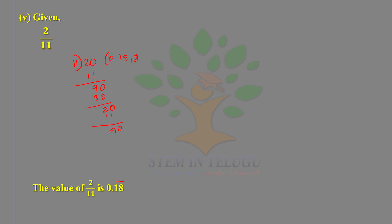The bar indicates that 1 and 8 are the repeating digits. Therefore, this is a non-terminating recurring decimal.